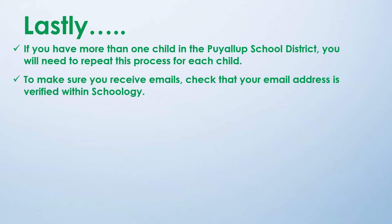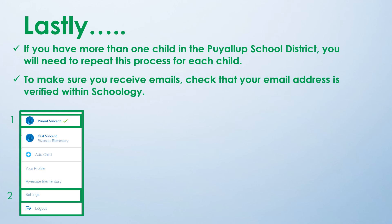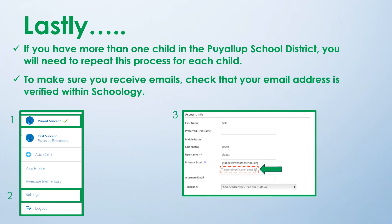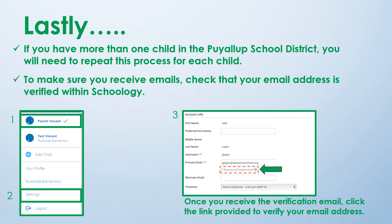To make sure you receive emails, check that your email address is verified within Schoology. To do so, click on your parent account, click Settings, and if you haven't yet verified your primary email address, you'll see a message to Resend Verification Email. Check the box next to the message and Save Changes. Once you receive the verification email, click the link provided to verify.